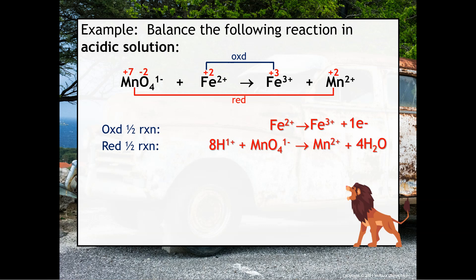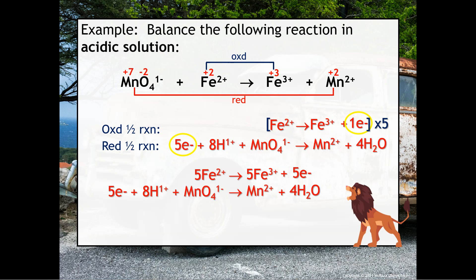We then need to balance for charge by putting electrons in. On the left-hand side, +8 plus −1 gives a net charge of +7. On the right-hand side, we have a net charge of +2. To make both sides +2, we add 5 electrons to the left-hand side. Notice the electrons lost does not equal the electrons gained, so we multiply the top half reaction by 5, then rewrite everything carefully.